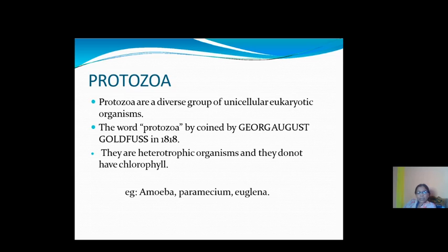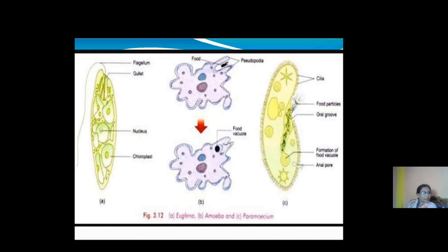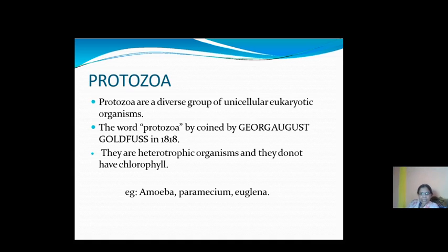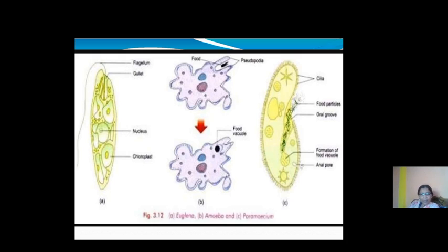Now, the General Characters of Phylum Protozoa include habit, habitat, body structure, and physiological activities. The word Protozoa means 'proto' means first, and 'zoa' means animals — these are the first animals to appear on earth. Protozoa are a diverse group of unicellular eukaryotic animals, founded by scientist George August Goldfuss in the year 1818. They are heterotrophic organisms and do not have chlorophyll. Examples include Amoeba, Paramecium, and Euglena.